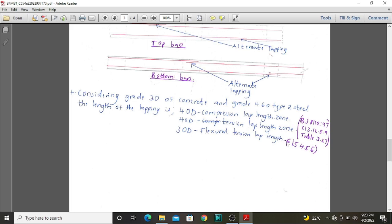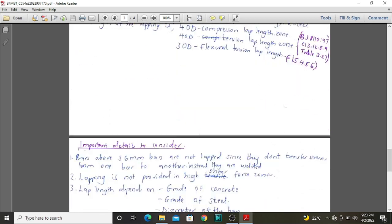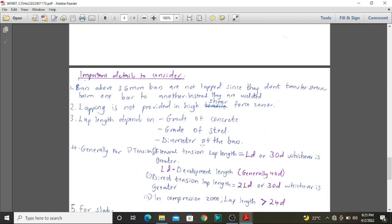Also, if we look at the Indian Standard, we need 30D in order to have flexural tension lap length. It is expedient to read different codes to determine, to be able to have the know-how of how they determine their parameters. And we also have some important details to consider.